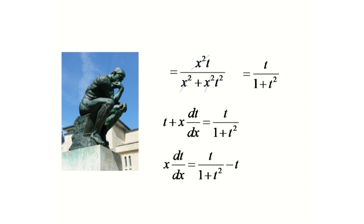Now, if we subtract both sides by t and simplify it further, we will get x dt by dx equals minus t cube upon 1 plus t square.